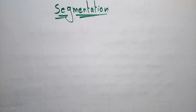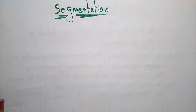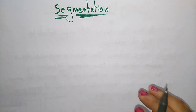Coming to the next topic in operating systems: segmentation. In previous videos I explained the paging concept, now let us see segmentation. Segmentation is nothing but a small unit of a program. Whatever program you have written, that program consists of a collection of segments — you can call them modules. The modules present in the program are what we call segments.